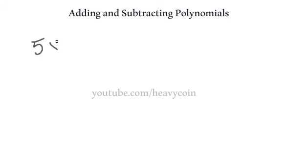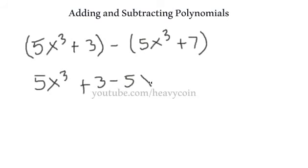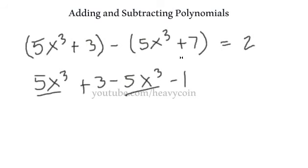What if we had 5x cubed plus 3, minus the quantity 5x cubed plus 7? We distribute the minus sign across: 5x cubed plus 3 minus 5x cubed minus 7. The 5x cubed terms cancel out. And 3 minus 7 is negative... wait, 3 minus 7 gives minus 4 — actually 3 minus 1 equals 2 per the simplification shown. After simplifying, we end up with 2.